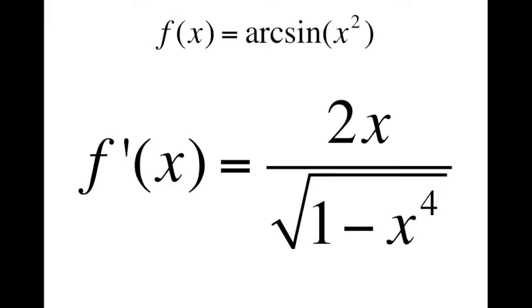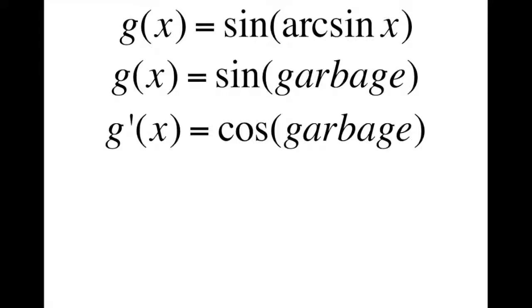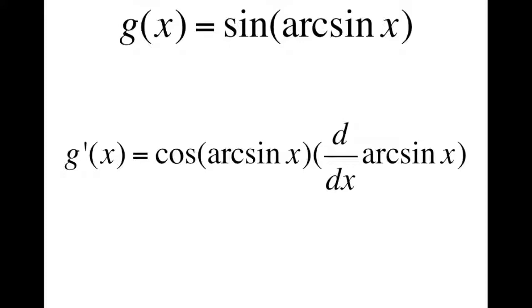Here, we set arc sine of x as garbage and take the derivative of sine of garbage, which would be cosine of garbage. Then we take the derivative of the garbage — arc sine of x — and multiply it to the previous derivative. The derivative of arc sine of x is 1 over the square root of 1 minus x squared, so we add that to this equation, and there we go — that's the derivative of sine of arc sine of x.